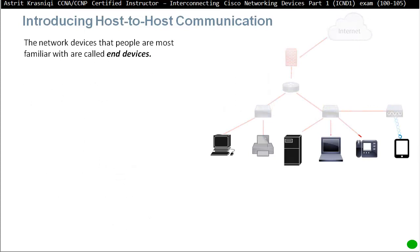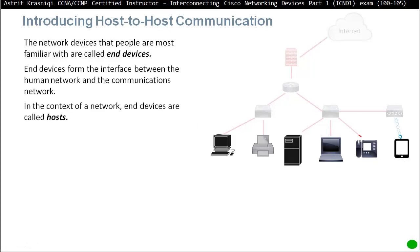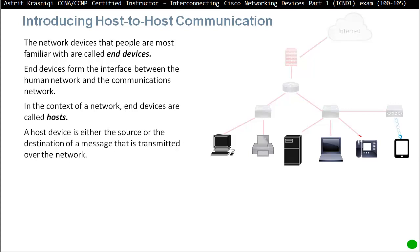In the network, the devices that users are familiar with are called end devices. For example, as you can see on the screen, end devices include a PC, printer, server, laptop, phone, IP phone maybe, and wireless devices. The end devices form the interface between the human network and the communication network. In the context of the network, end devices are also called hosts.